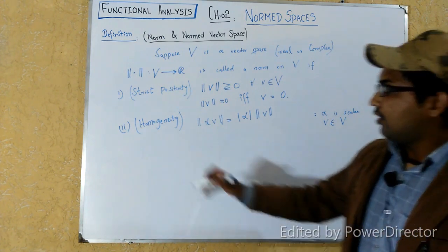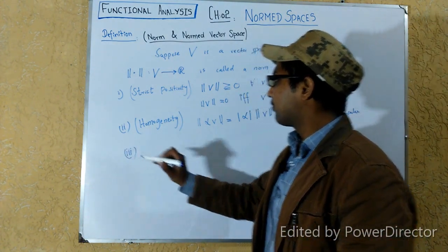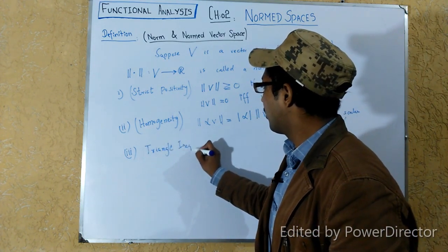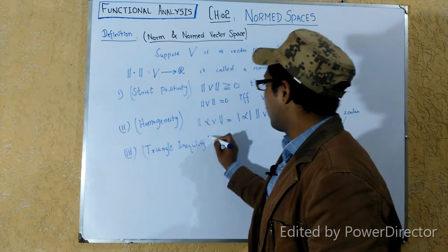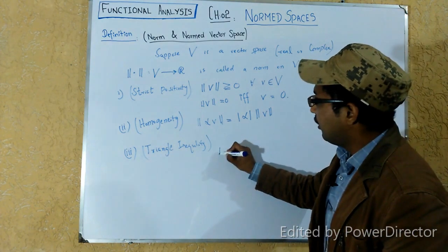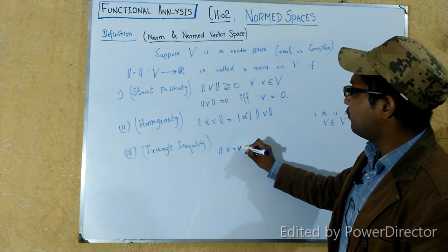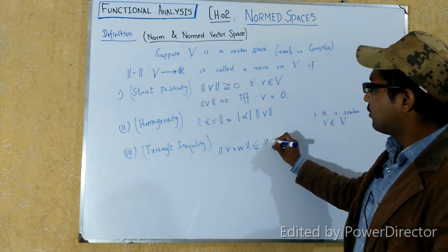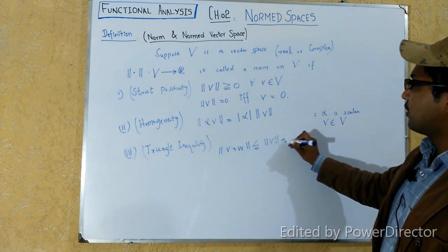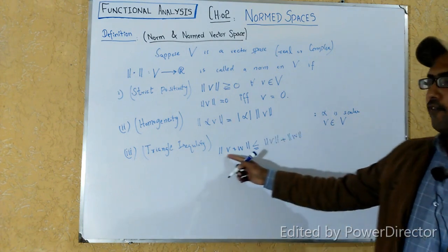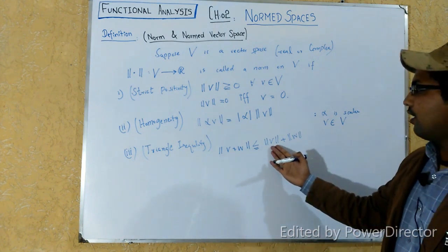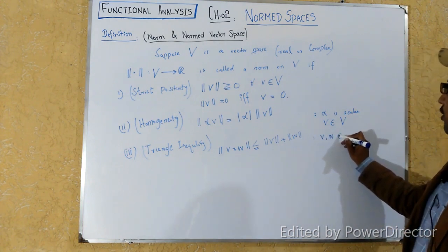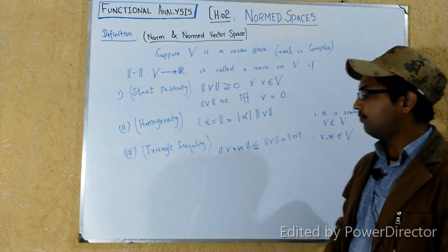The third property is called the triangle inequality. This property says that the norm of the sum of any two vectors in the vector space V is less than or equal to the sum of the individual norms. That is, the norm of V plus W is less than or equal to the norm of V plus the norm of W, where V and W belong to the vector space V.